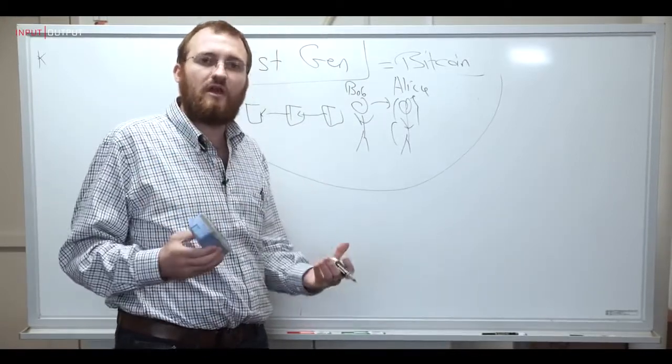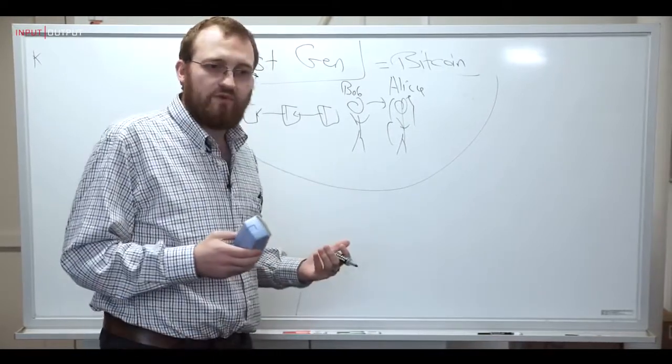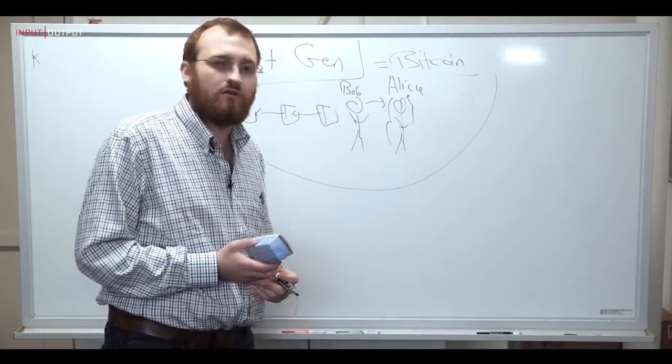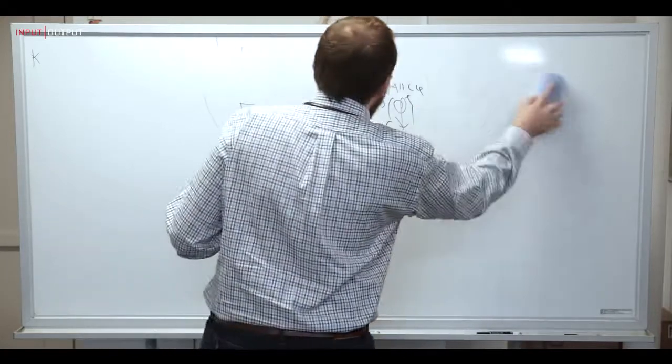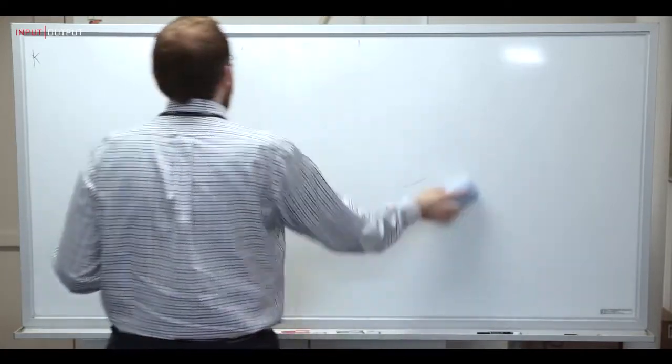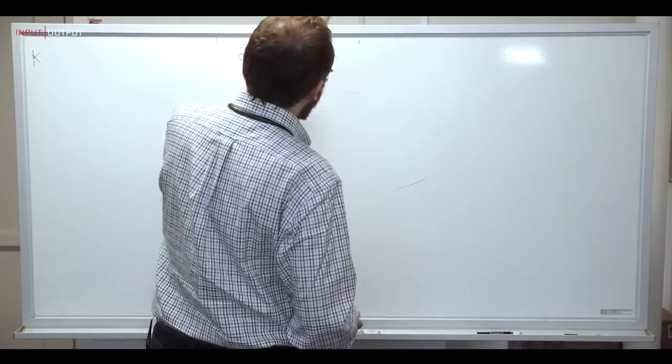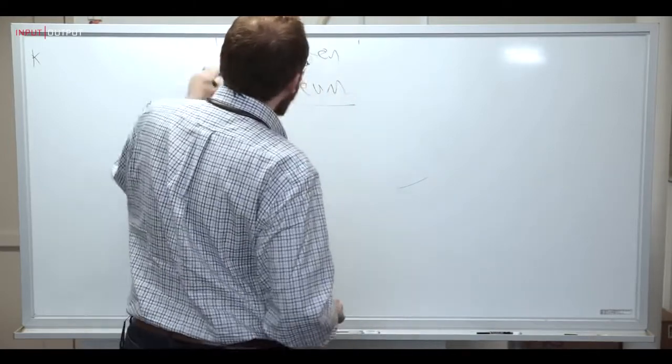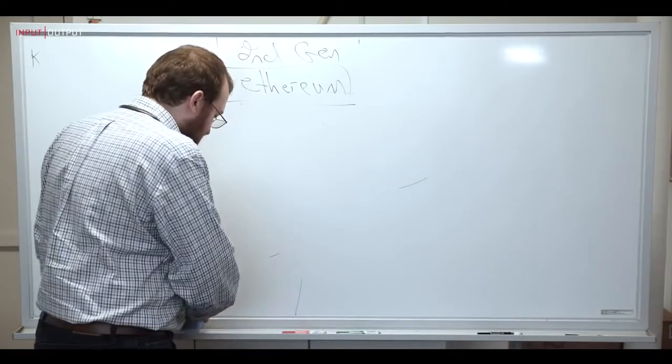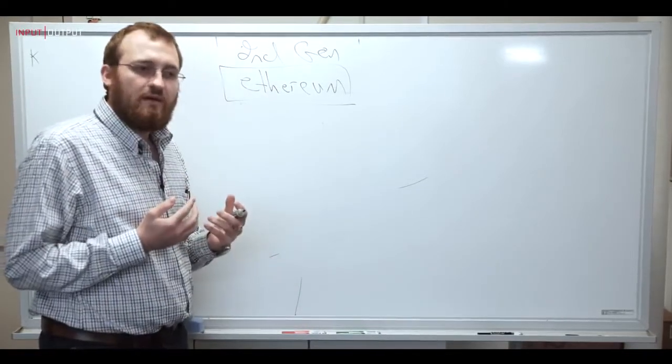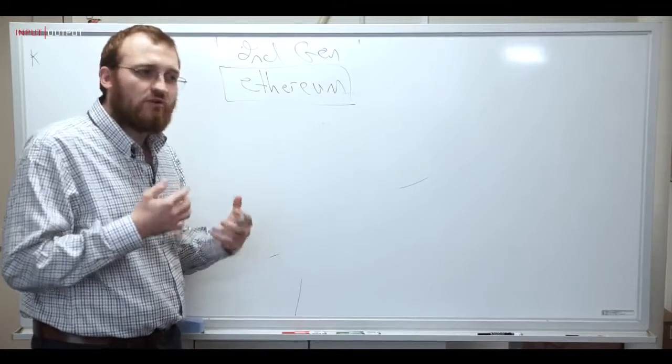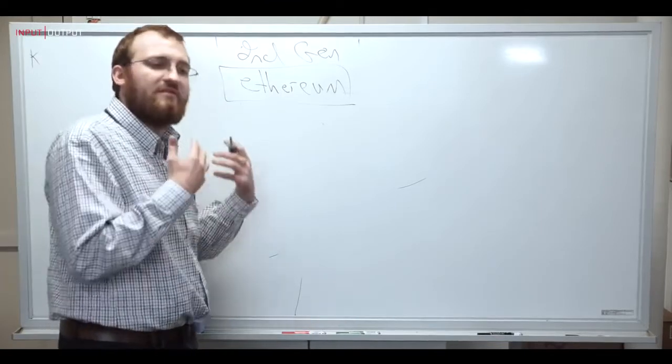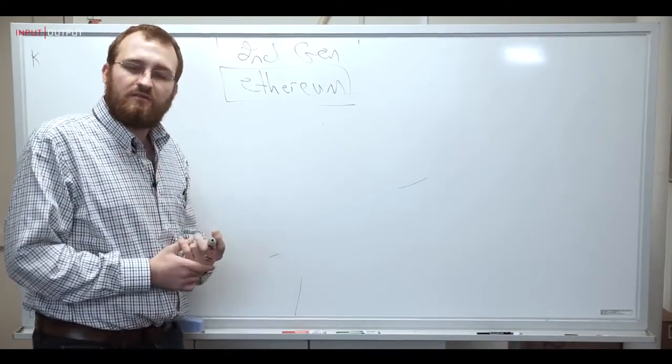Back in 2014, Vitalik Buterin, myself and many others came together and we launched the first second-generation blockchain. And this is Ethereum. Now Ethereum is kind of like when JavaScript came to the web browser. We went from these static simple pages to pages that were fully programmable and enabled us to build the Facebooks, the Googles, the Gmails, the experiences we've come to know and love.